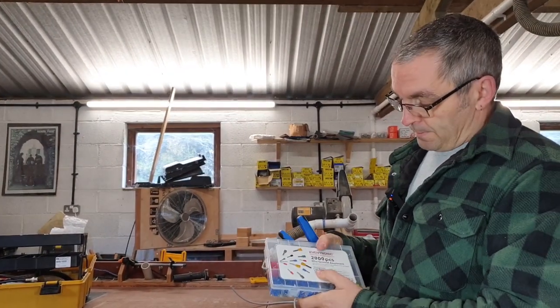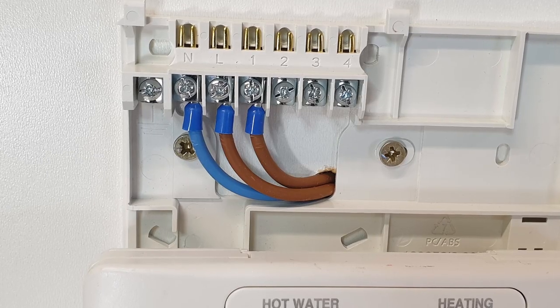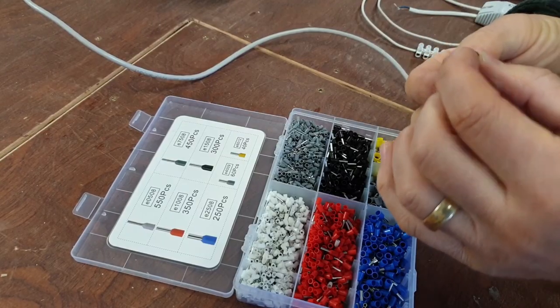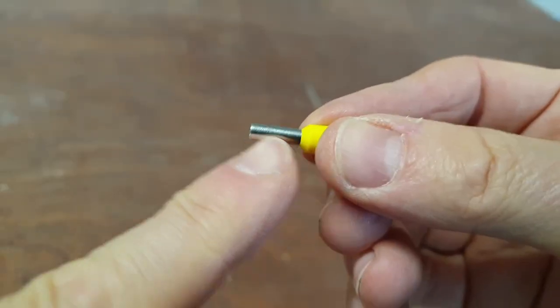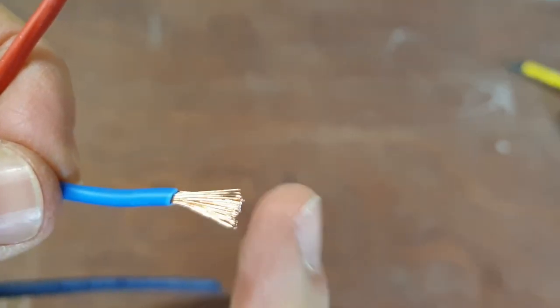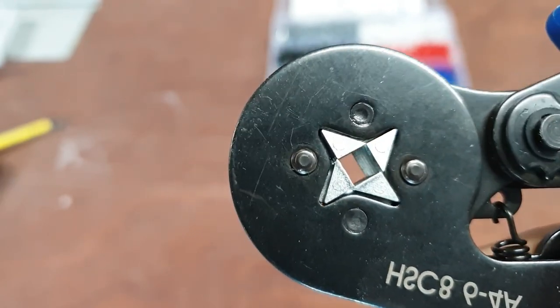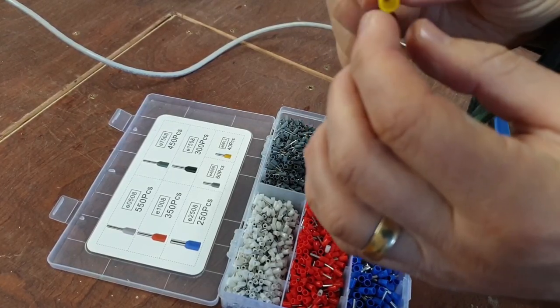I've got this little kit. These are boot lace ferrules, but what are they, where do we use them, and how do we use them? Basically tin plated copper tube which we place over a braided or stranded cable and then crimp it down using the tool, and that gives the cable a lot more strength.